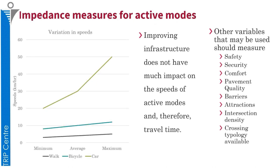I am showing how travel speeds vary when infrastructure is improved. If we improve infrastructure for walking and bicycling, speeds do not increase very much compared to cars. Therefore, impedance based on travel time will not reveal any benefit in terms of travel time saving for bicycles, cycles, and pedestrians.